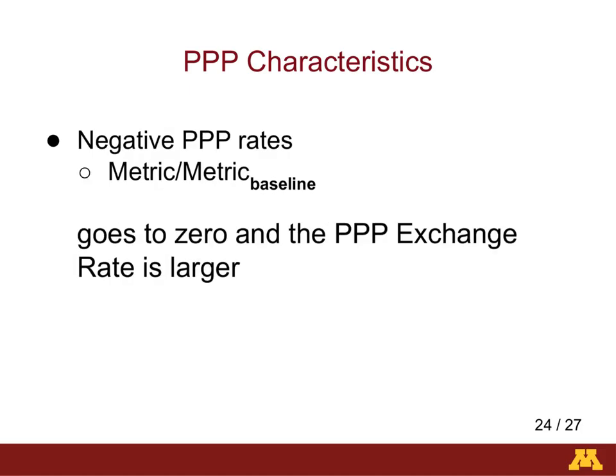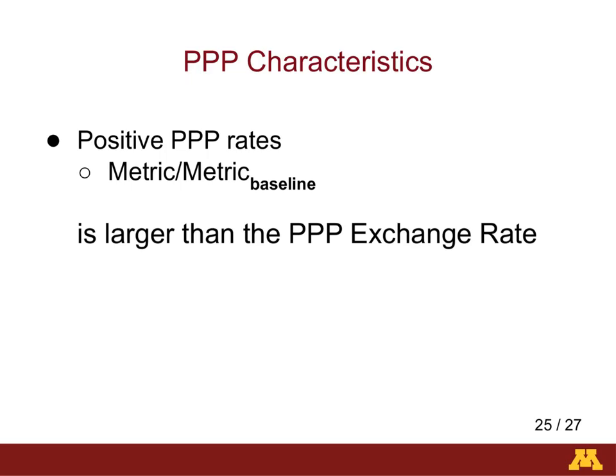A positive PPP rate is achieved when the PPP exchange rate is smaller than the metric ratio. In this case, the metric value can be of a larger magnitude than its baseline (the 64-thread run), or the counter denominator value is smaller than its baseline — meaning it needs fewer counter denominator units to reach the same value as the baseline.